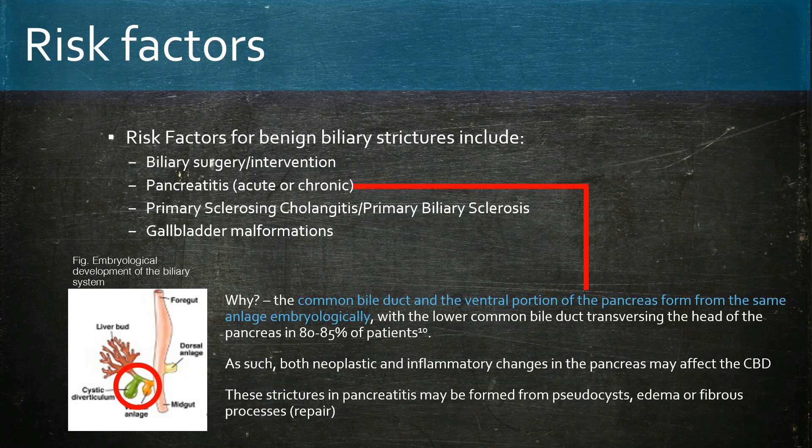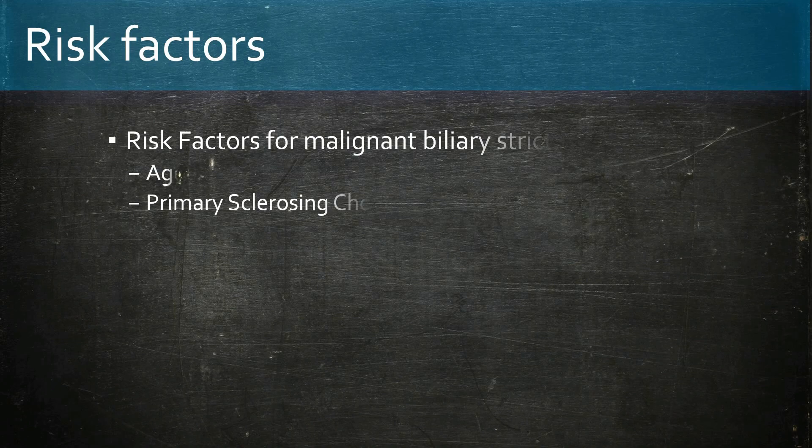Risk factors for malignant bile strictures include age and primary sclerosing cholangitis.